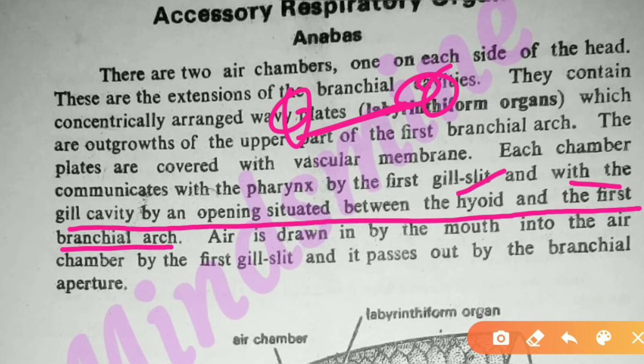Air is drawn in by the mouth into the air chamber through the first gill slit, and it passes out by the branchial aperture. This is a small description sufficient for the practical portion on Anabas.